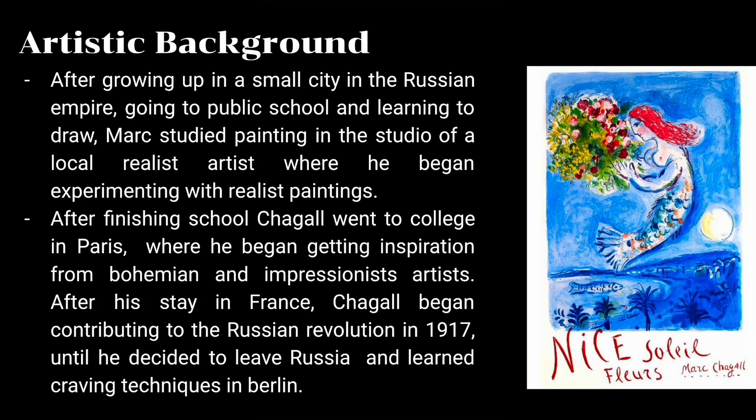Furthermore, after finishing school in Russia, Chagall went to college in Paris, where he began getting inspiration from Bohemian and Impressionist artists. After his stay in France, Chagall began contributing to the Russian Revolution in 1917, until he decided to leave Russia and learned engraving techniques in Berlin. All of this allowed Mark to have a lot of knowledge on many types of artwork, allowing him to then experiment with modernism.